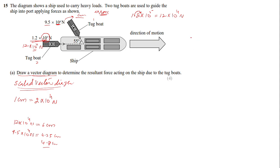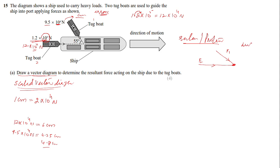Remember, for a scale vector diagram you must always use a ruler and protractor to draw arrows and angles. Looking at the free body diagram: the ship has force F1 (9.5×10⁴ N at 55°) and force F2 (the horizontal force). To find the resultant, you join these vectors head to tail.